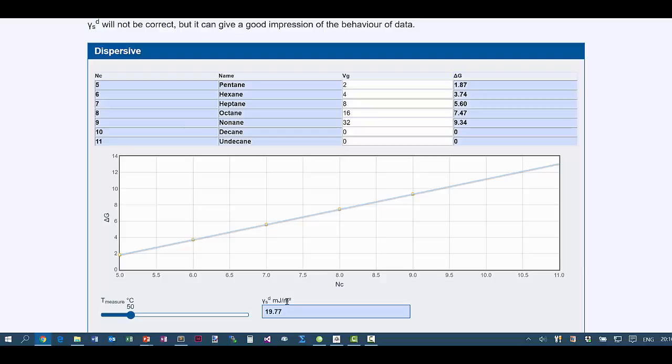So relatively simple measurements, just of a few alkanes, just measuring the retention times, converting those into Vg and then delta G, you can calculate the dispersive surface energy. That's enough for the basics. In the second video, we'll talk about some more interesting aspects that you can measure with IGC.